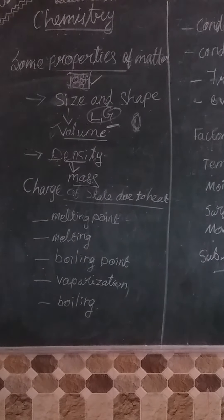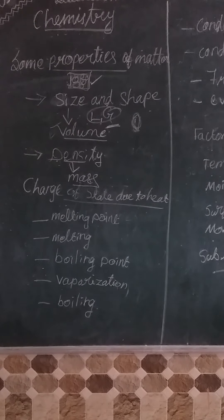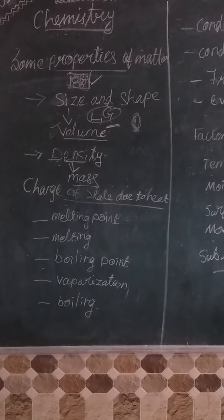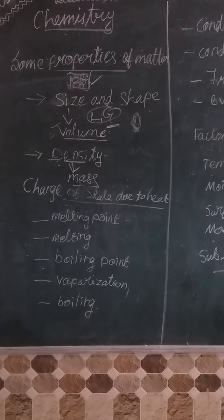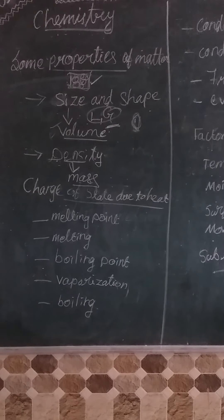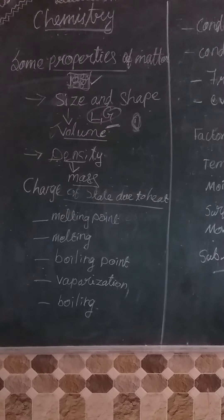Change of state due to heat. We are going to discuss about a few topics: first one is melting point, then melting, then boiling point, vaporization and boiling. So there are four topics. First we can see about melting point. You know about the melting process.